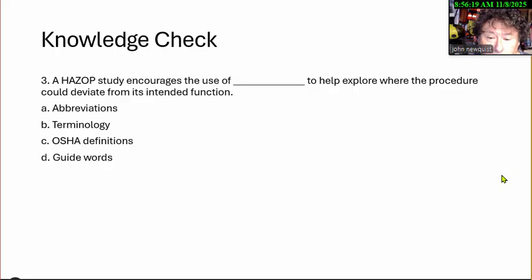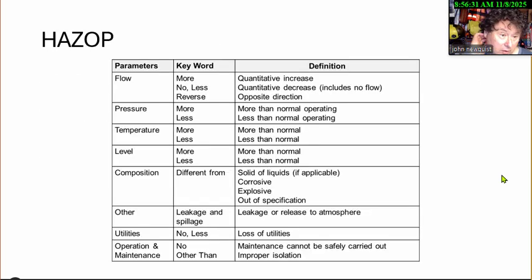HazOp study encourages the use of blank to help explore where procedures could deviate from its intended function. Abbreviations, terminology, OSHA definitions, guide words. So in this example, they use the key word instead of the answer. If we have something like on a pump, what's the flow? Guide words would be more, less, no, reverse.